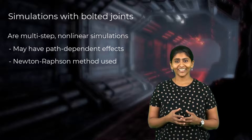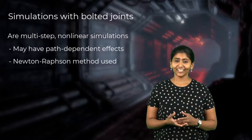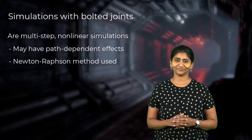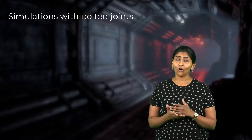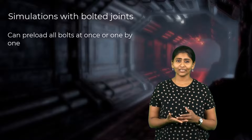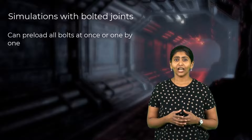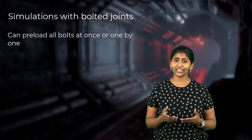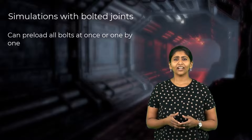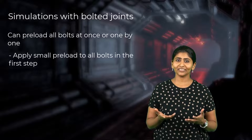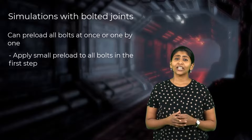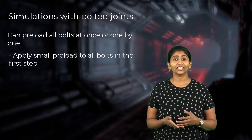The Newton-Raphson method is discussed in detail in another course titled Methods of Solving Problems. Usually, preloading all the bolts at once versus applying preload to bolts in sequence are the same, but it is possible to simulate the second case. In such cases, just apply a small preload — say about 10% of the final value — to the untightened bolts in step 1 so that the bolts do not separate from the rest of the structure.